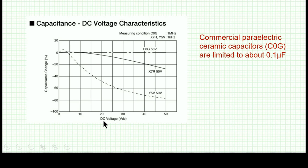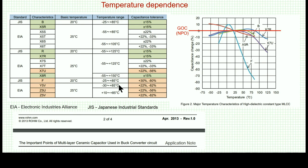Here is just an example: the NPO is very stable with voltage, while the X7R and other materials show significant drops. There is also temperature dependence to consider — the NPO is best, and the various ferroelectric materials have different temperature behavior. The X7R is a good compromise, which is why it is very popular.